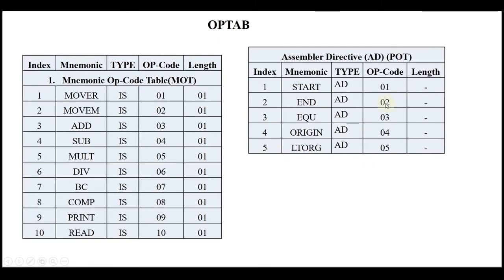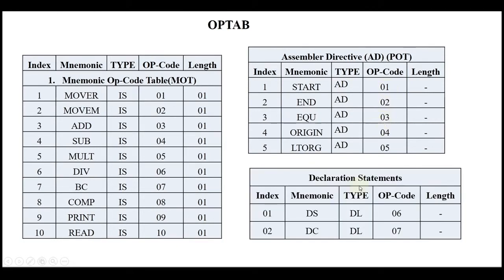The next type of opcode table is the pseudo opcode table (POT). In this table, five mnemonics have type AD (assembly directive) with opcodes 01 through 05. The last type is the declarative statement table with DS (declarative storage) and DC (declarative constant), assigned opcode numbers 01 and 02. These are the three types of opcode tables considered.